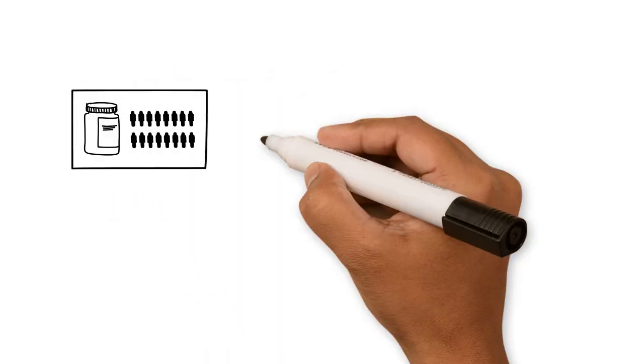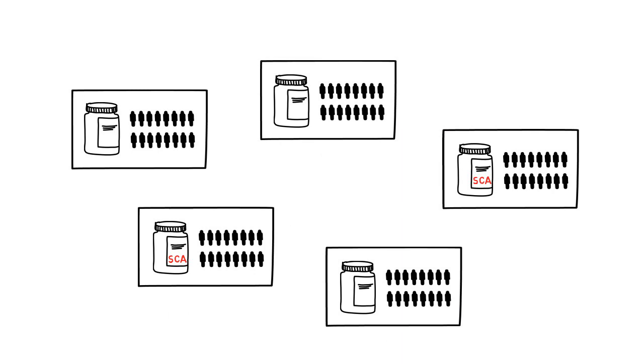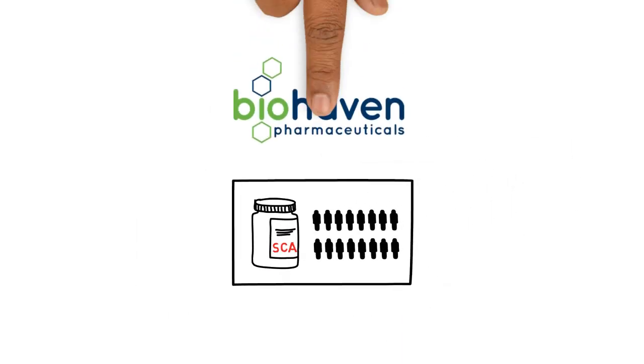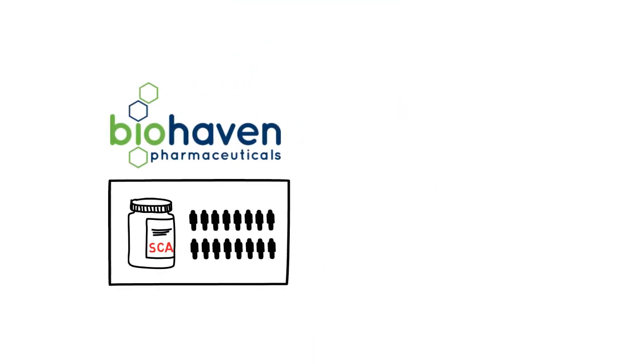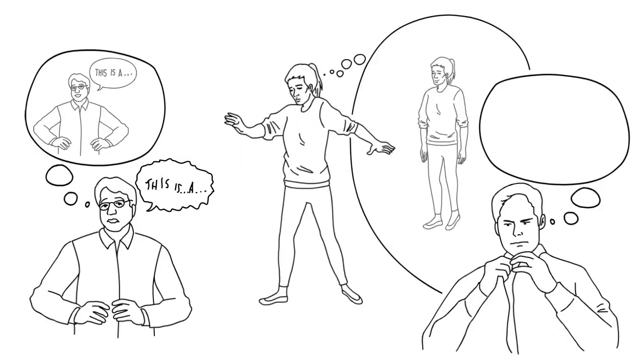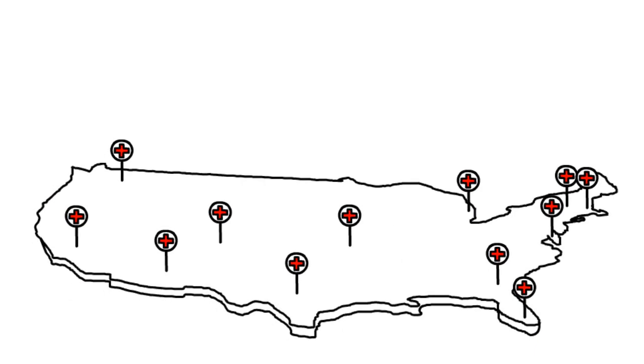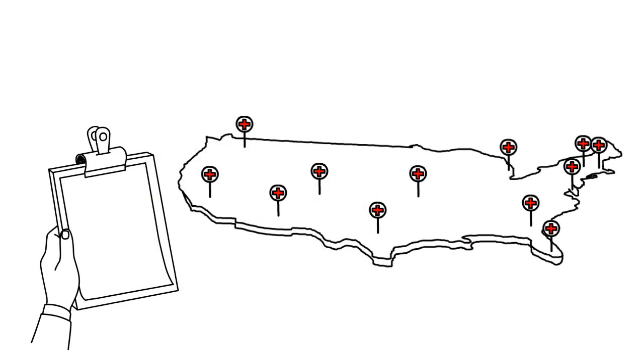There are few clinical trials to identify potential treatments for people affected by SCA. A new study, sponsored by Biohaven Pharmaceuticals, is designed to determine if Troriluzole, a drug being developed for the potential treatment of ataxia, can slow down and improve ataxia symptoms. More than 18 medical centers in the U.S. are participating in the trial and seek to enroll patients in the study.